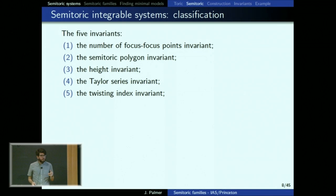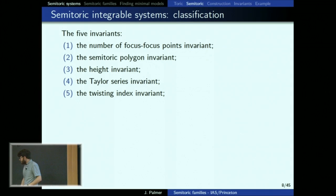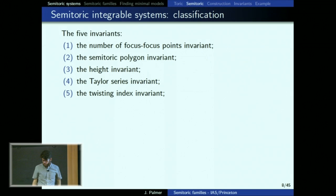So we have these five invariants. [Question: Could you give an example of a semi-toric physical model?] The spherical pendulum is almost semi-toric, except that the Hamiltonian for the S^1 action isn't proper. But a lot of this will come through in the spherical pendulum, so that's a good example to keep in mind.